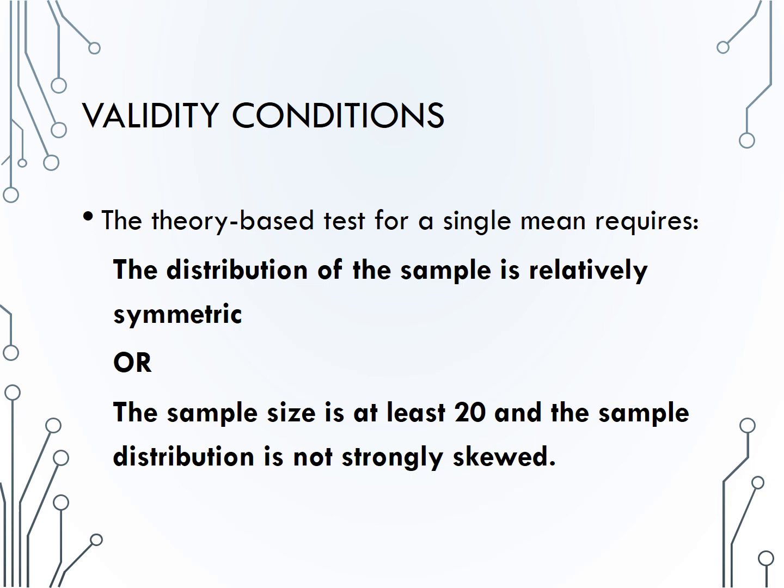Again, you can use the theory-based inference applet to easily obtain a theoretical confidence interval. The theory-based inference applets are shown in the one mean applets video. You just need to select the box for confidence interval and enter your required confidence level instead of selecting the box for test of significance.